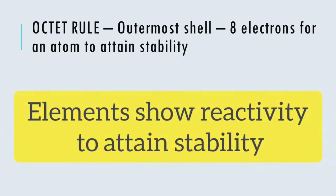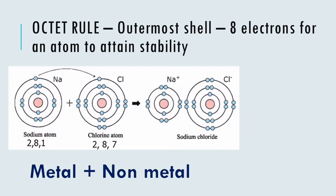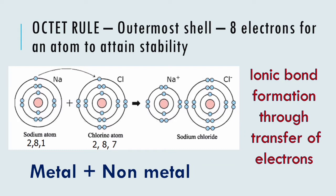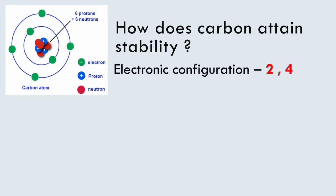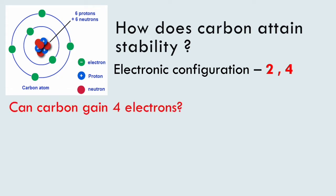In our lower classes, we learned that the reactivity of elements is due to their tendency to attain the nearest inert gas configuration, or they need to obey the octet rule. In the previous chapter — that is the third chapter — we learned how ionic bonds are formed between a metal and non-metal through transfer of electrons. In the case of carbon, it has 4 electrons in the outermost shell. So, will it lose its 4 valence electrons, or will it try to gain 4 electrons to attain noble gas configuration?